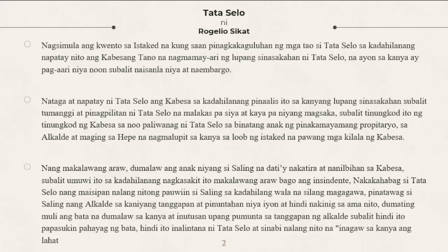Now na siguro ay ating nabasa na ng buo yung kabuang istorya ng Tataselo ni Rogelio Sikat. Basahin natin yung summary. Itong Tataselo na kwento ay patungkol sa isang matanda na hinangad lamang na makapagsaka sa kanilang lupa na naibenta dahil nagkasakit ang kanyang asawa.